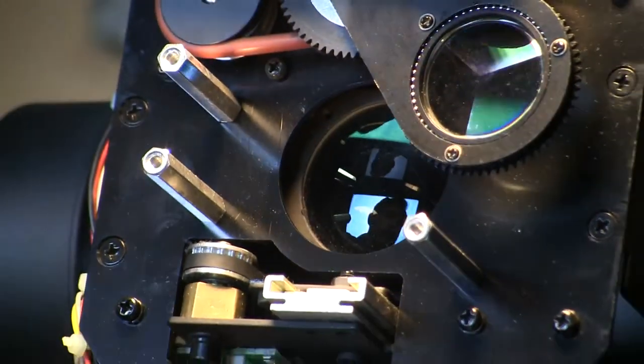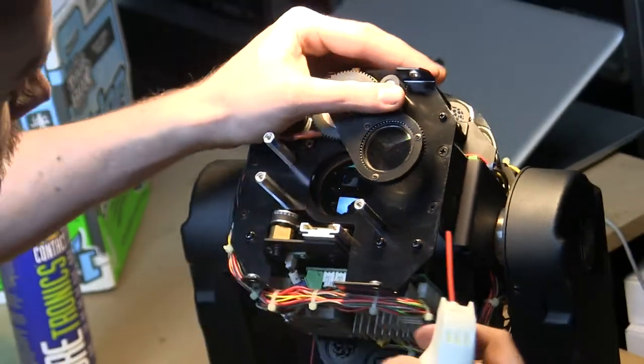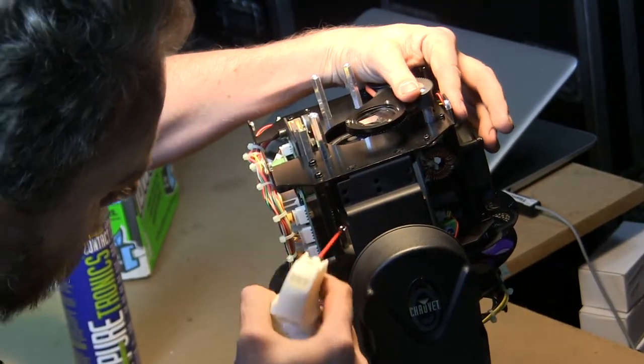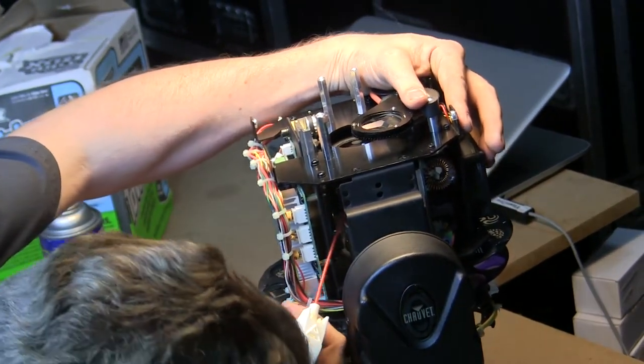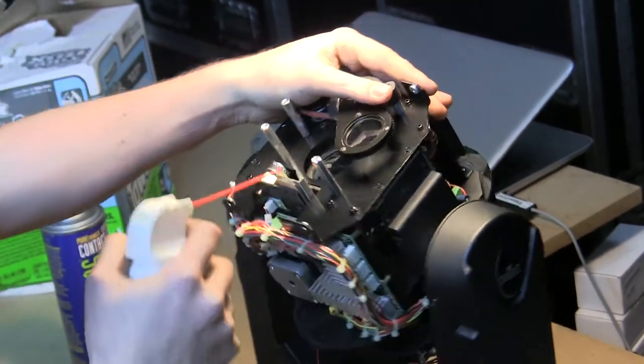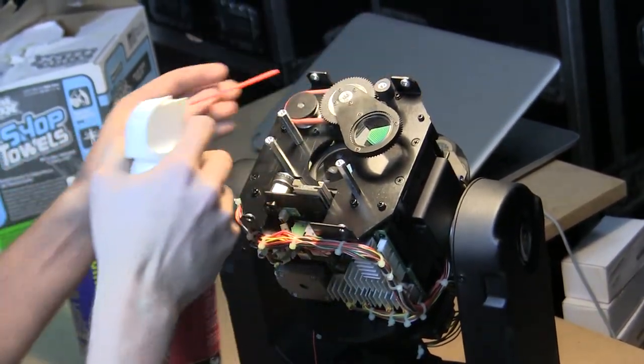From here, we're going to go ahead and take a little bit more air. Just trying to blow off anything that our cleaning cloth might have kicked up. Trying to blow up on the bottom of the lens and the top. You see how that dust just came out? Do your best just to clean what you can.